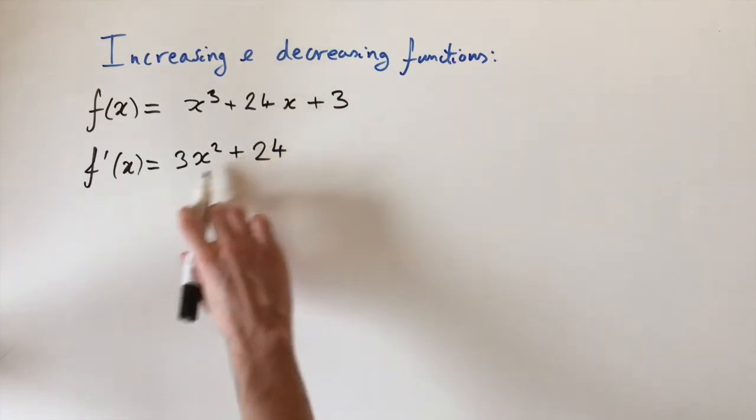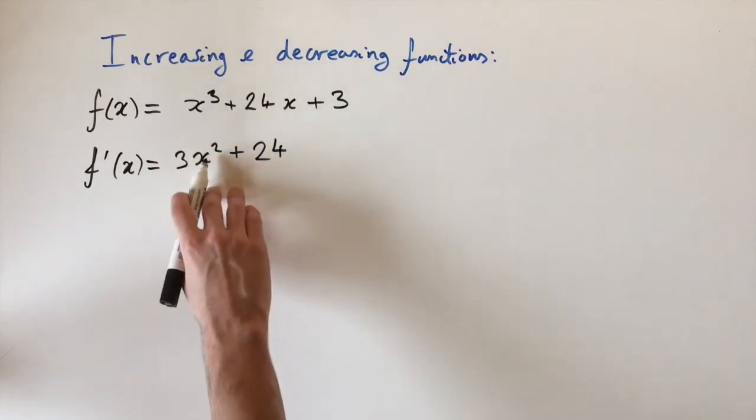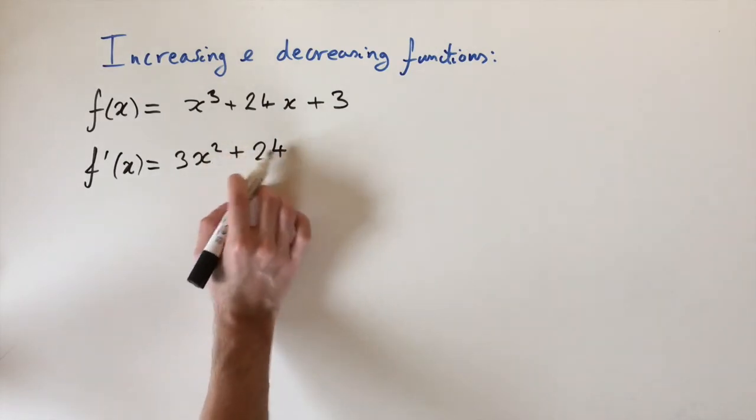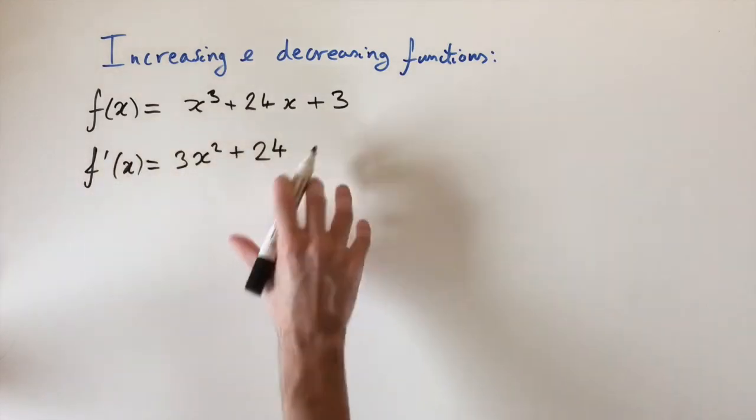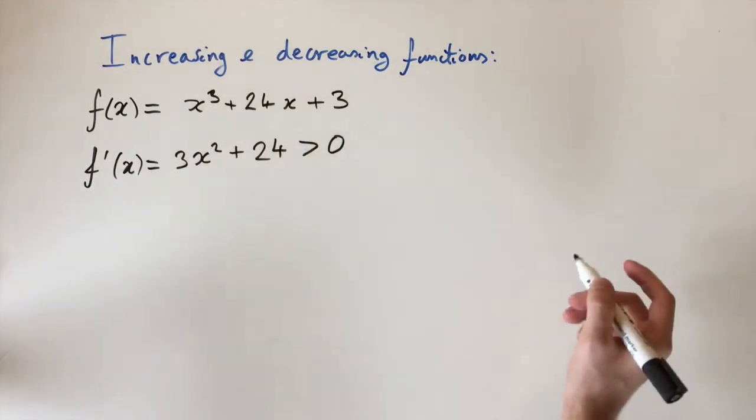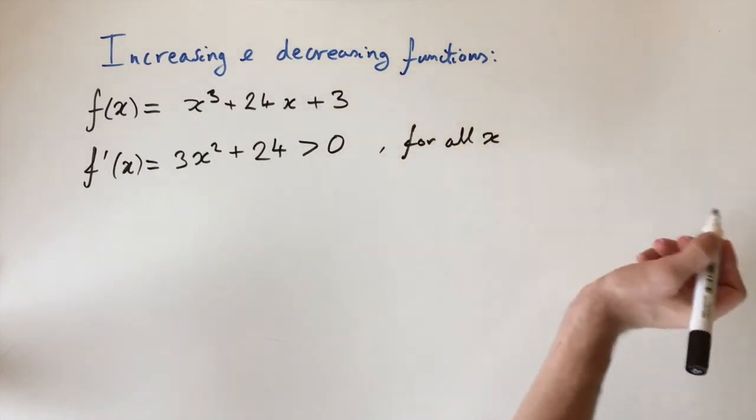We have this positive constant, we have a positive constant here, and we've also got this term x². Now this is always going to be non-negative, and since we have a positive constant, this whole derivative, this is always strictly positive for all x.